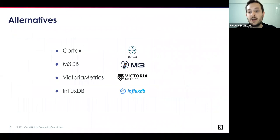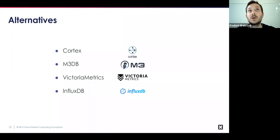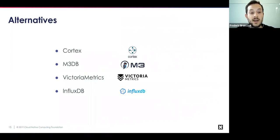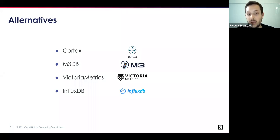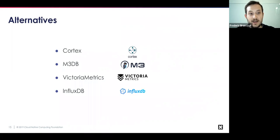There are a couple of alternatives. We decided to keep the list to those most closely related to Thanos. There is Cortex, which is already a CNCF project — quite similar to the third deployment option where Prometheus replicates its database to a remote place. M3DB, created by Uber, has a distinct integration mechanism with Prometheus. Victoria Metrics is similar to Cortex in API and deployment model. InfluxDB, though not born in the Prometheus world, also accepts the remote write protocol.